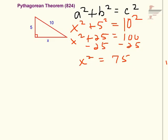Now the final step is to put your answer in simplified radical form. If I square root both sides, I'll get x equals the square root of 75. That can be simplified.